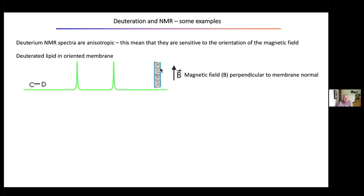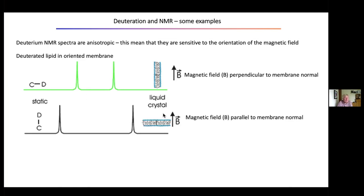Here is deuterated lipid in oriented membranes — exactly the kind of system we looked at in the 1980s by both neutron diffraction and deuterium NMR, complementing the two methods. In a magnetic field parallel to the membrane normal, you get two spectral lines from a deuterium on the chain or head group. Rotating the membrane so the magnetic field is perpendicular to the membrane normal changes the line separation. This allows us to work out the orientation of the CD group in our lipid quite precisely.